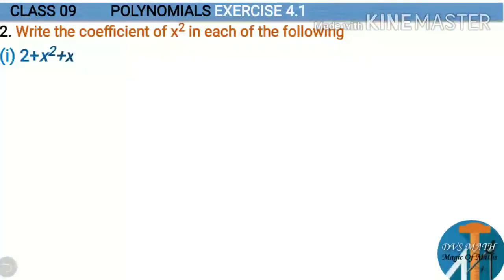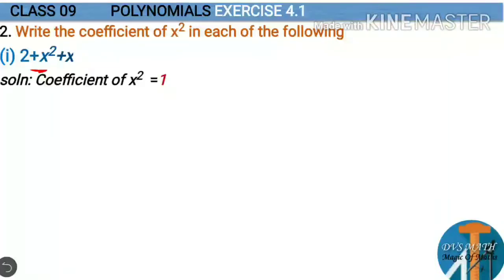First expression: 2 + x square + x. Here, observe the coefficient of x square — there is nothing written in front of it, so you consider it as 1. The coefficient of x square is equal to 1, because 1 is the number multiplied to the variable x square.